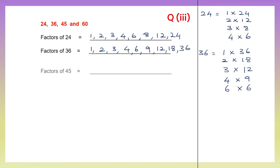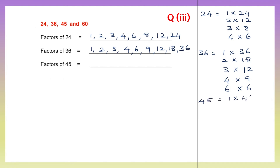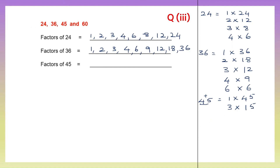Now let's write the factors of 45: 1 into 45 is 45. What else? Check if divisible by 3 — 4 plus 5 is 9, yes it's divisible by 3. So 3 into 15 is 45. Then 5 nines are 45. That's it. So the factors of 45 are 1, 3, 5, 9, 15 and 45.